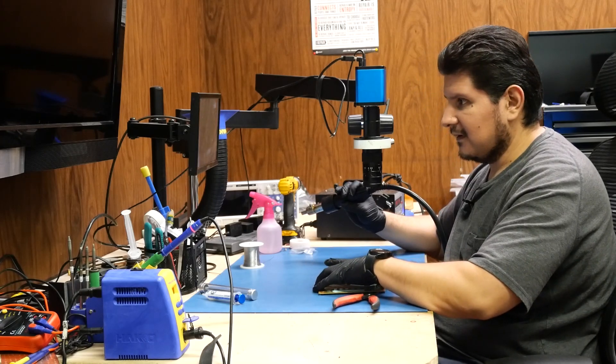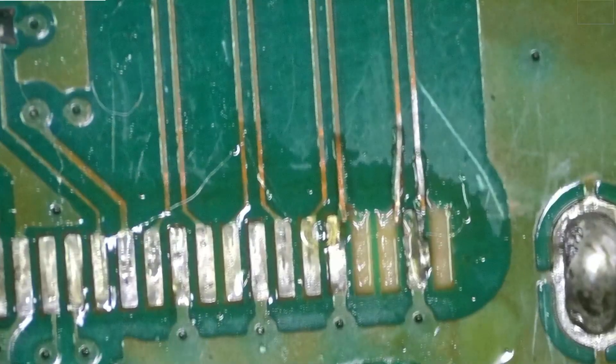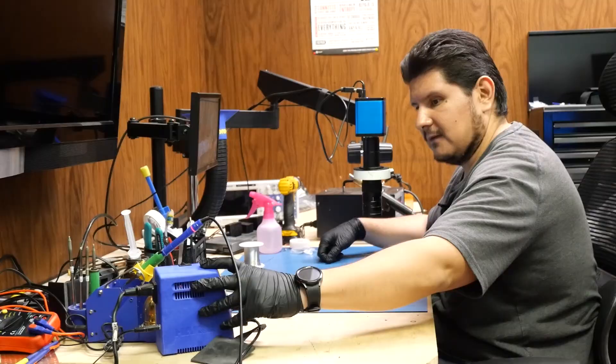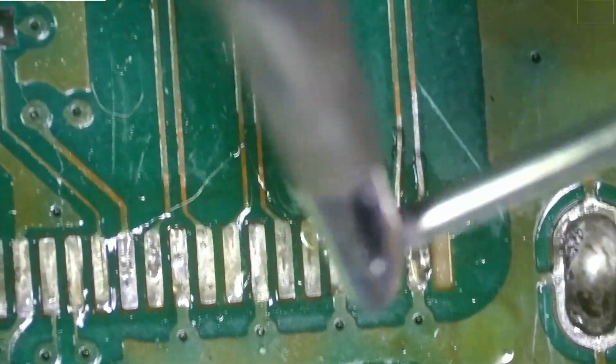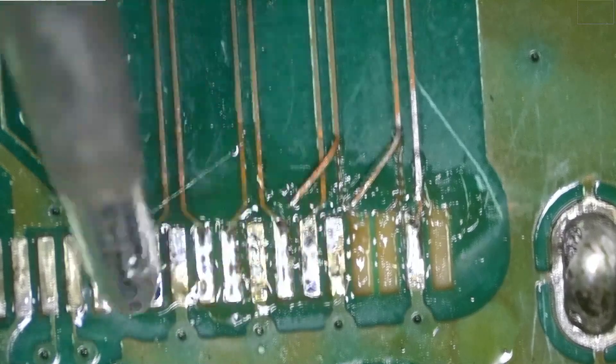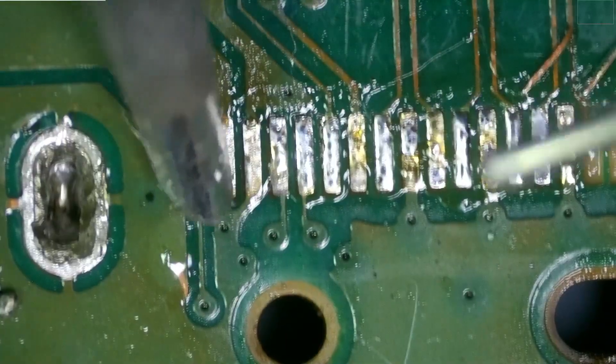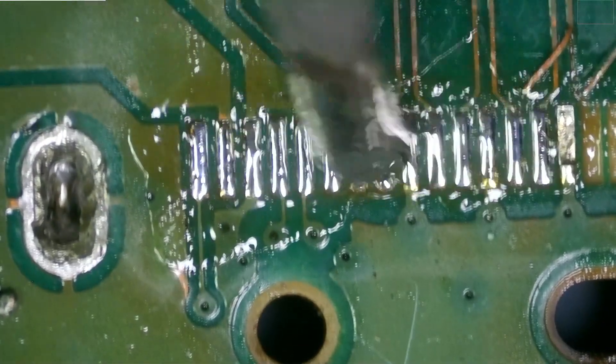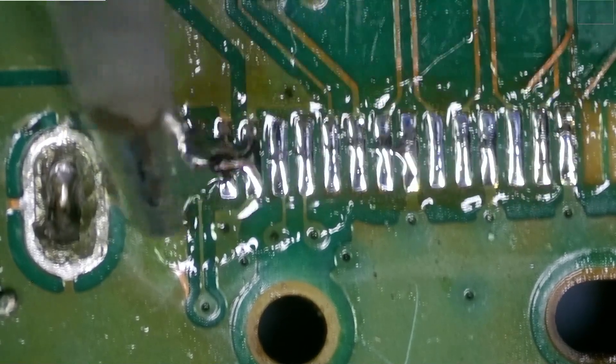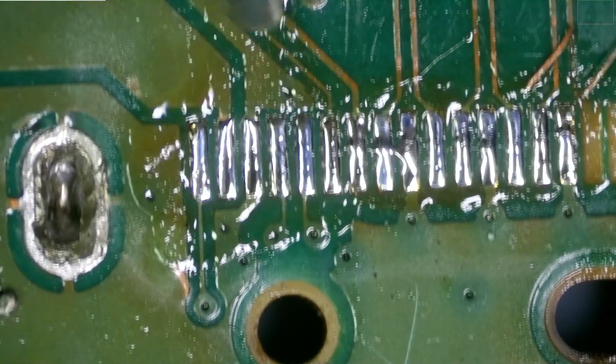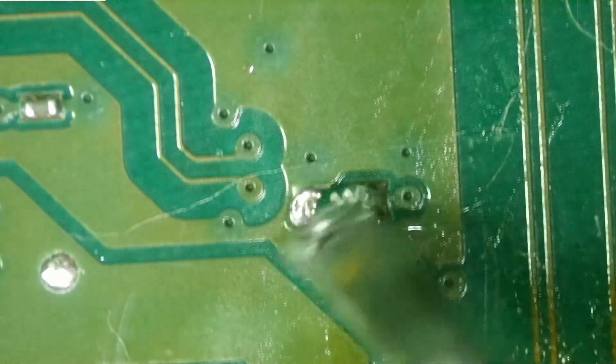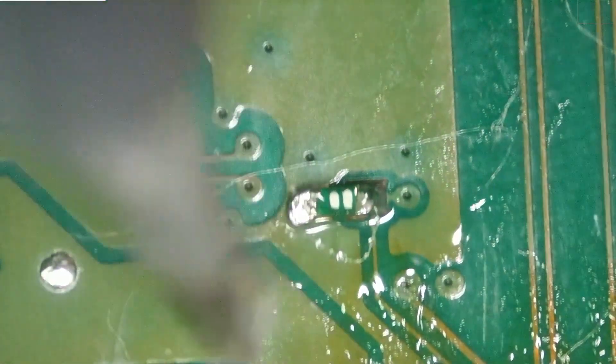Now it has been removed, let's go ahead and take a look at the damage. So it doesn't look too bad. Let's go ahead and set our iron down to 350. It looks like that's not really on 100%.